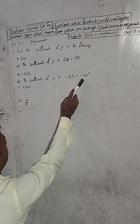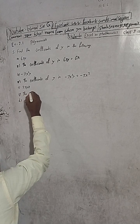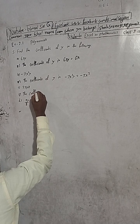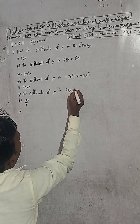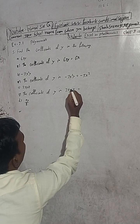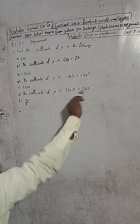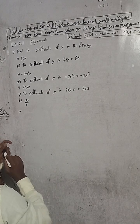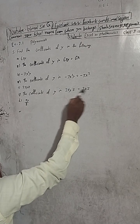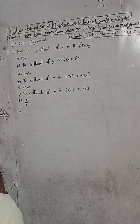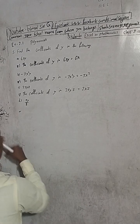Now, the coefficient of y in 2xyz. Except this y, what are the terms? 2x and z — so 2xz is the coefficient of y. Here, 2 is the numerical coefficient and xz is the literal coefficient.